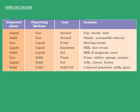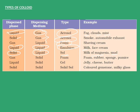Let's see some types of colloid. When the dispersed phase is liquid and the dispersing medium is gas, it is known as aerosol — for example, fog, clouds, and mist. When the dispersed phase is solid and the dispersing medium is gas, it is also aerosol. So basically, when the dispersing medium is gas, it is known as aerosol. When the dispersing medium is liquid and dispersed phase is gas, it is called foam. When both dispersing medium and dispersed phase are liquid, it is called an emulsion — for example, milk and face cream. When the dispersing medium is liquid and dispersed phase is solid, it is called sol — for example, mud and milk of magnesia.